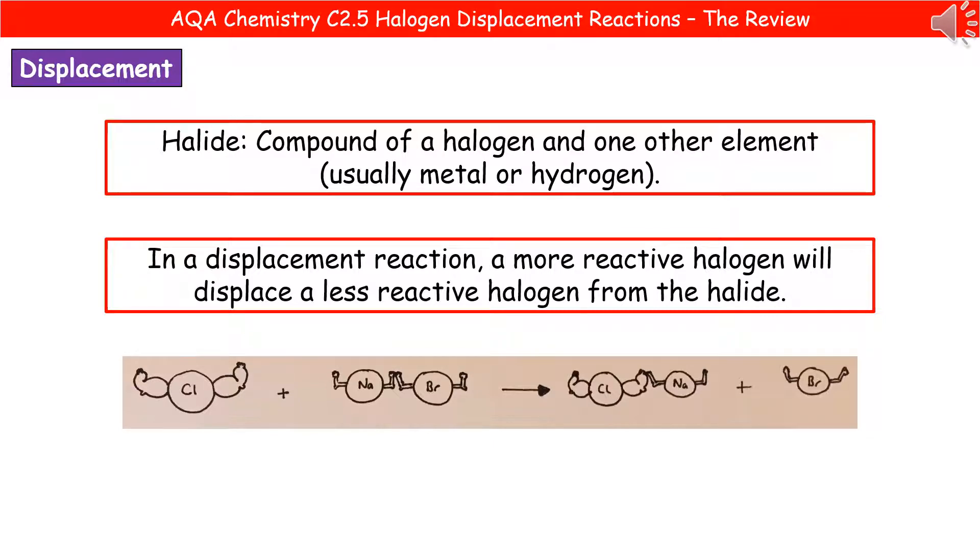So to give you an example, I've got my amazing drawing skills out here. So we start off with chlorine, which is up near the top of the group, which means it is reactive. Then we've got our salt here, our halide of sodium bromide. And bromine comes beneath chlorine, so it's less reactive. So you can see it's got weak little arms there. Now, when we mix chlorine and sodium bromide together, the chlorine is more reactive than the bromine. And therefore, it pushes it out of the way and takes its place with the sodium. So we end up making sodium chloride and poor old bromine is pushed out on its own.